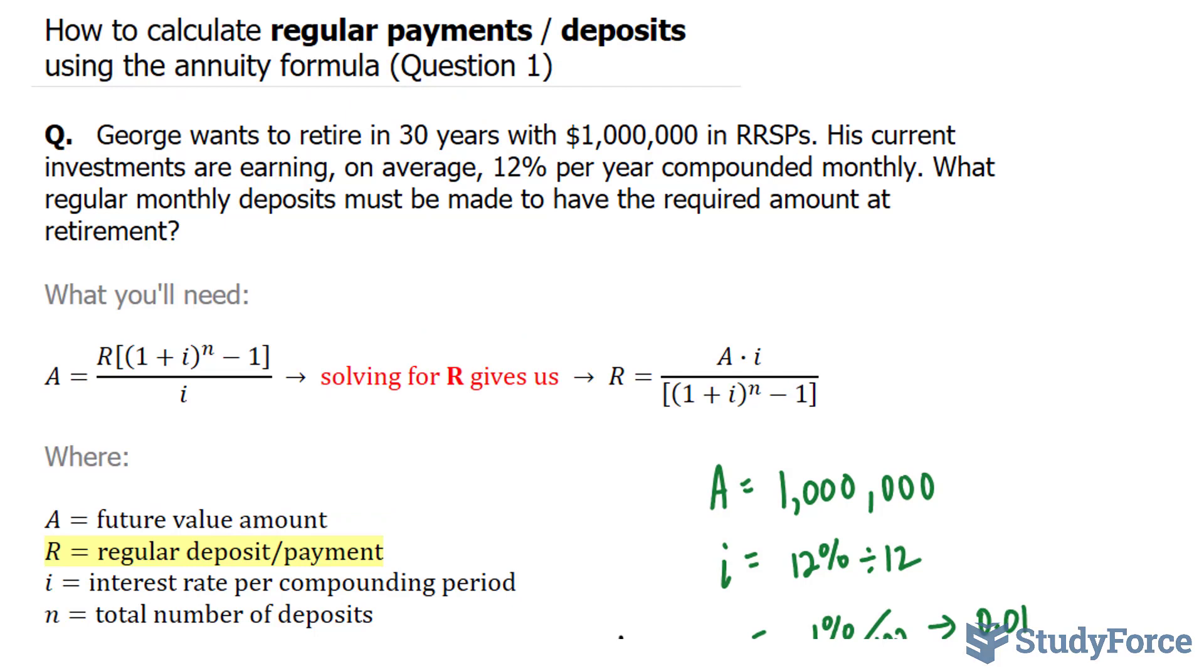So there you have it. That is how to calculate regular payments or deposits using the annuity formula. Stay tuned for question 2.